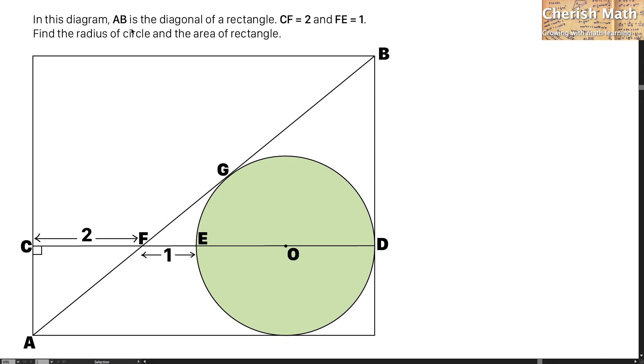In this diagram, AB is the diagonal of rectangle. CF equals 2 and FE equals 1. Find the radius of circle and the area of rectangle.